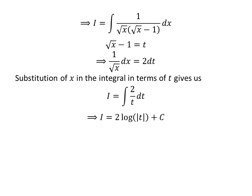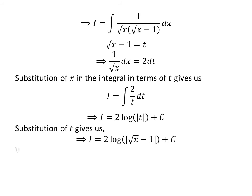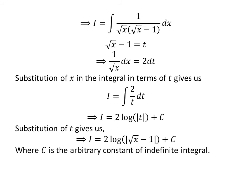Capital C is the arbitrary constant of the indefinite integral. Never forget to add this constant. Let us substitute t in terms of x. Since we had assumed t is equal to square root of x minus 1, so i is equal to 2 times natural log of the absolute value of square root of x minus 1, plus capital C.